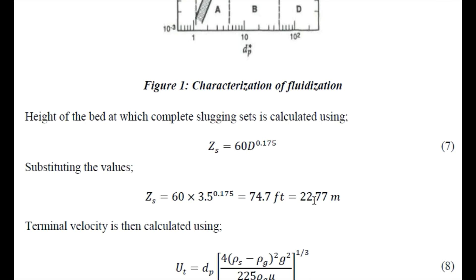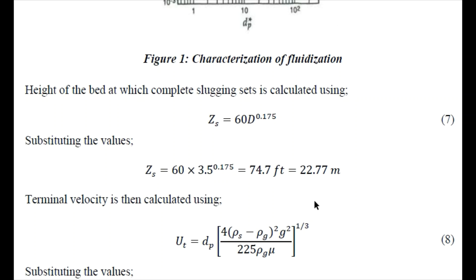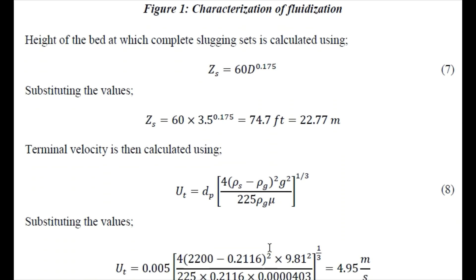Now let's move towards the height of the bed that slugging test sets. That is given by zs equals 60 times d power 0.175. Substituting these values we obtain 74.7 feet and we just convert it into meters that comes out to be 22.77 meters. Then we need to find the terminal velocity because particles will be settling under terminal velocity where gravitational forces and buoyant forces are balanced. We just need to substitute these values here to find the terminal velocity that comes out to be 4.95 meter per second.